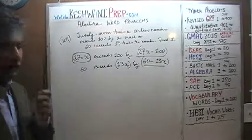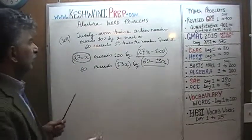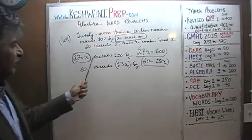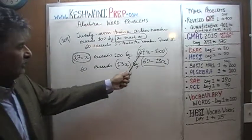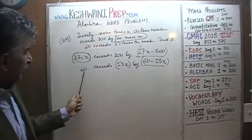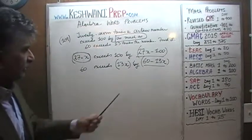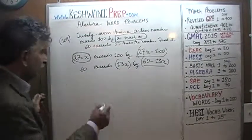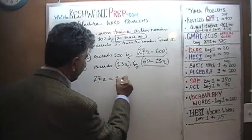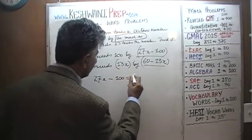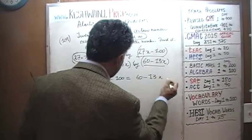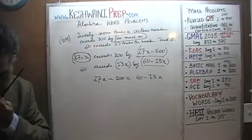That's the part we have to understand; the rest is easy. We are told these two quantities are equal: 27X exceeds 100 by as much as 60 exceeds 13X. So 27X minus 100 equals 60 minus 13X. Now it's a very simple linear equation.